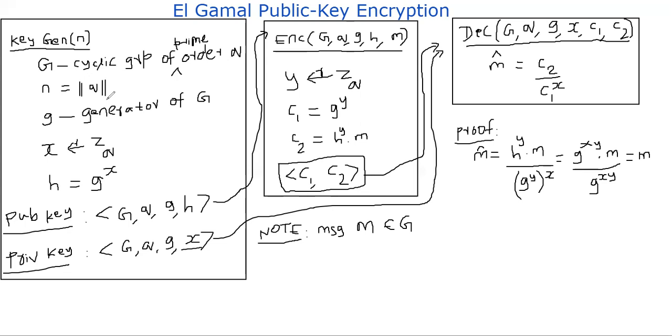But at this point, assume you have a cyclic group G of prime order Q, and n denotes the number of elements in your cyclic group. More precisely, n denotes the bit size of your cyclic group order.